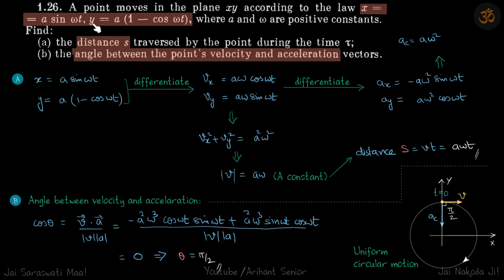We are given x and y as functions of time, both are sine functions, and we need to find the distance travelled by the point during the time τ and the angle between the velocity and acceleration vectors.